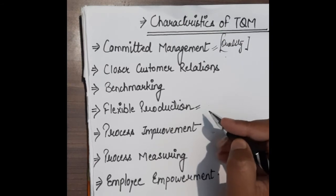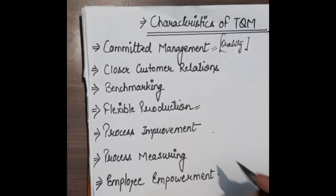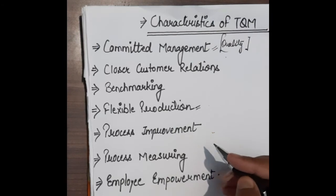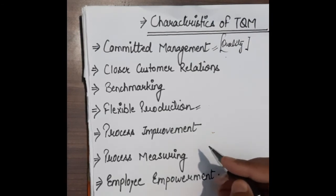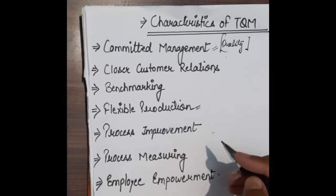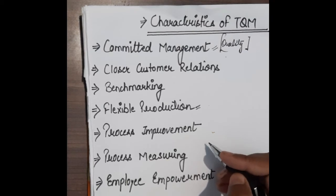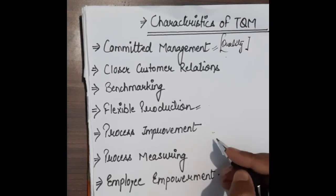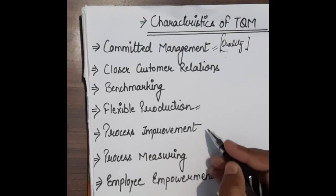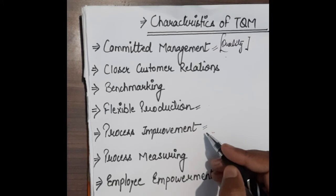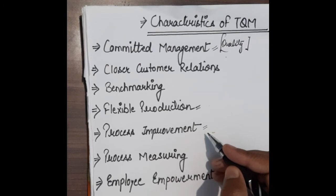Next is process improvement. When we study TQM, process improvement means that we have to ensure that every process involved in TQM and the production process is improved one by one. When each process improves, ultimately our finished end product is quality-oriented. TQM focuses on your processes regarding manufacturing any product or service.